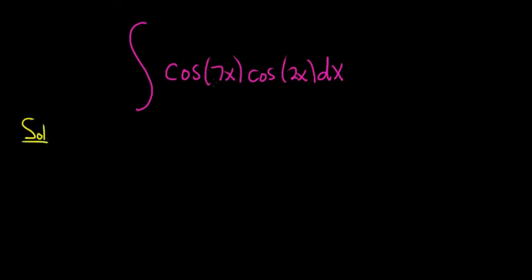So whenever you have something like this, where it's cosine of something times cosine of something else, there's a formula you can use. It's one of the product-to-sum identities.